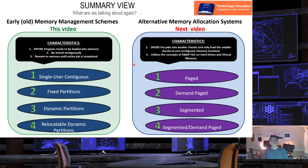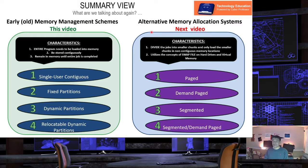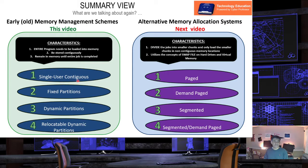In summary, we are talking about the early memory management schemes. For an upcoming video posted next week, we will discuss the alternative memory allocation systems. But for this week, we are going to discuss these four early memory management schemes: single user contiguous, fixed partitions, dynamic partitions, and relocatable dynamic partitions.